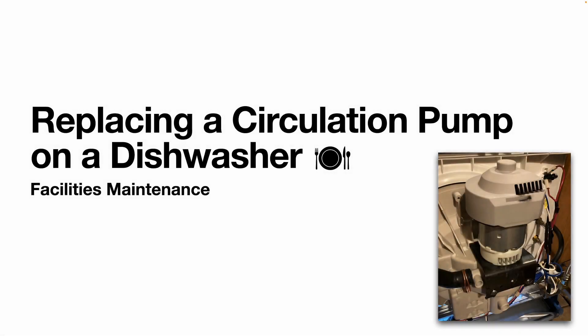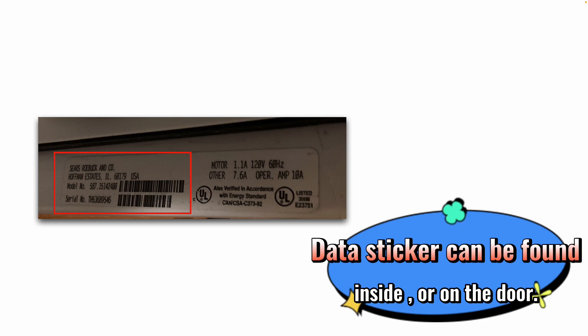Today we're talking about how to replace a water recirculation pump on a dishwasher. Specifically, the model we're working on is manufactured by Sears and Roebuck. There are other similar brand names that these go by.